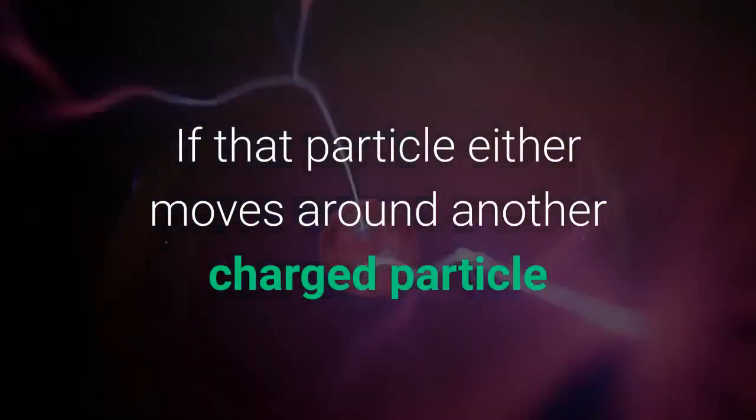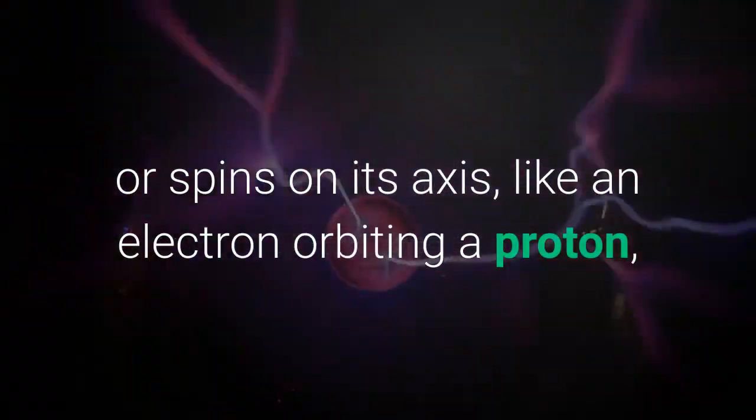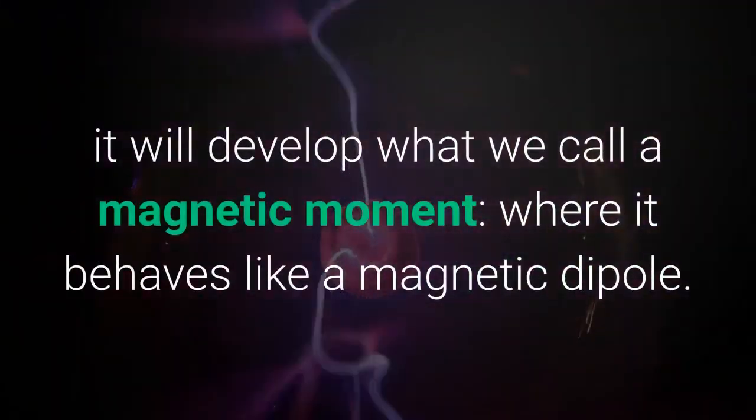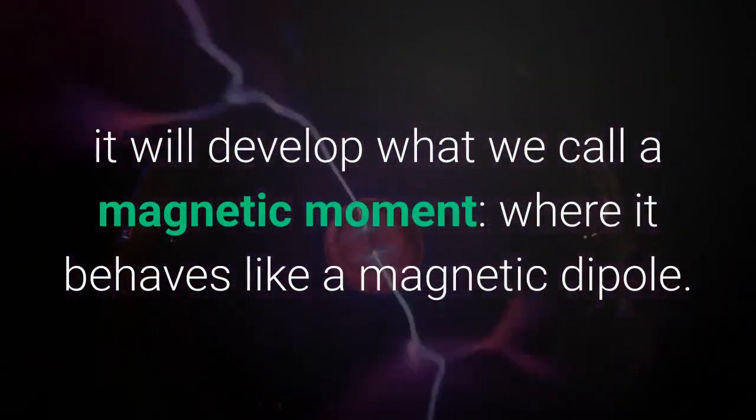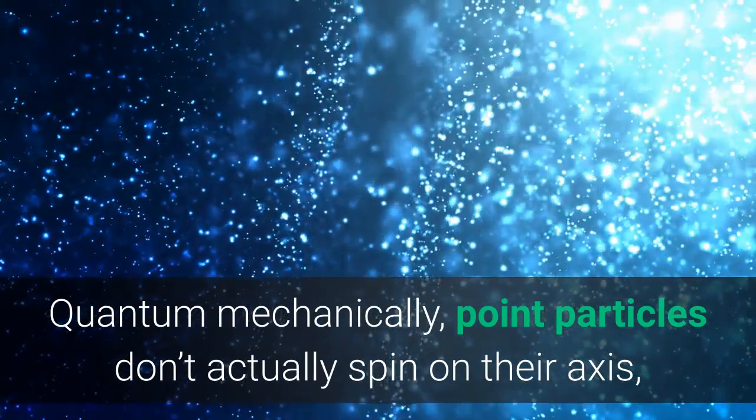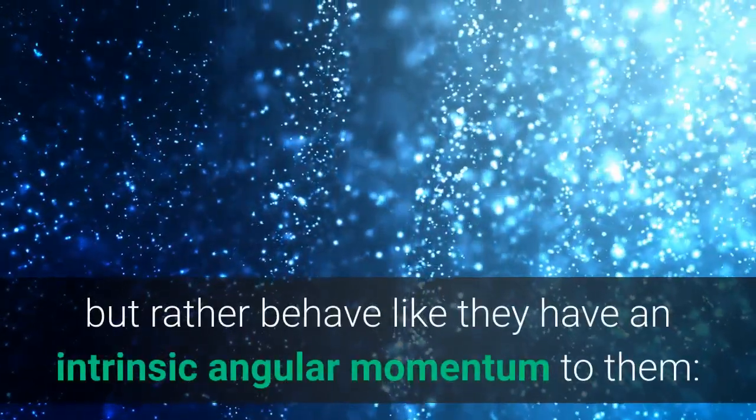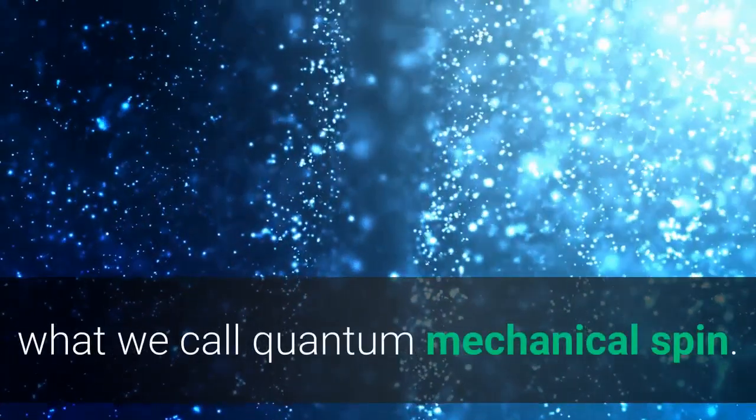If that particle either moves around another charged particle or spins on its axis, like an electron orbiting a proton, it will develop what we call a magnetic moment, where it behaves like a magnetic dipole. Quantum mechanically, point particles don't actually spin on their axis, but rather behave like they have an intrinsic angular momentum to them, what we call quantum mechanical spin.